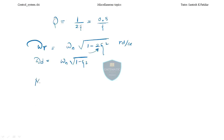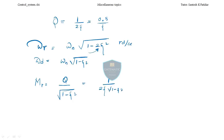Corresponding to omega_r, we talk about M_r — the magnitude at omega_r. This is given by Q divided by the square root of 1 minus zeta squared. Since Q equals 1 by 2 zeta, this gives another formula to remember. So M_r equals 1 divided by 2 zeta times the square root of 1 minus zeta squared. Better to remember it as Q divided by the square root of 1 minus zeta squared.